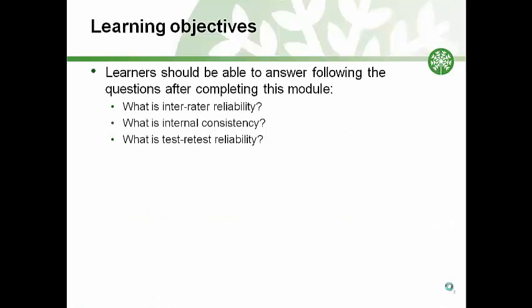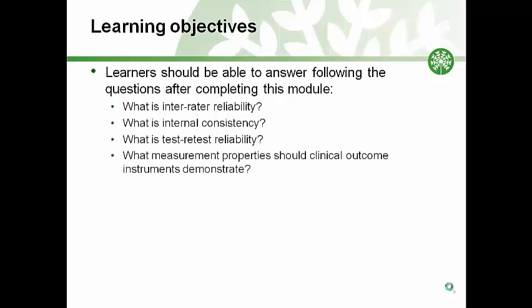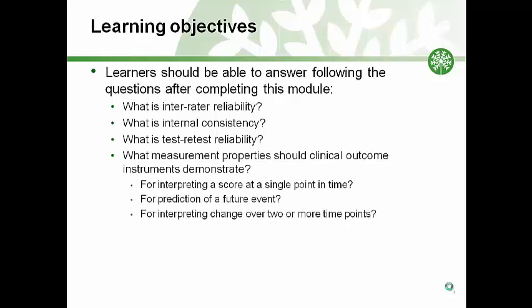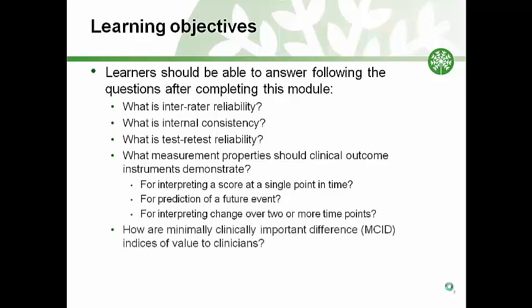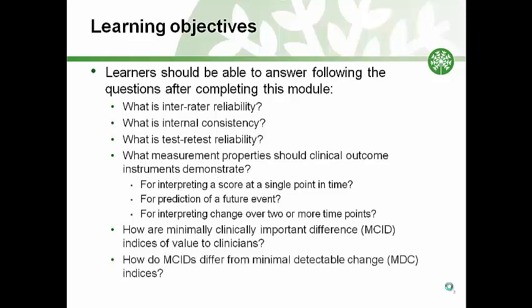After this module, you should be able to answer the following questions: What is inter-rater reliability? What is internal consistency? What is test-retest reliability? What measurement properties should clinical outcome instruments demonstrate for interpreting a score at a single point in time, for prediction of a future event, and for interpreting change over two or more time points? How are minimally clinically important differences, or the MCID, indices of value to clinicians, and how do MCIDs differ from minimal detectable change indices?